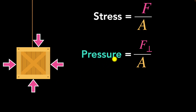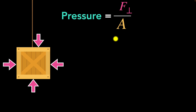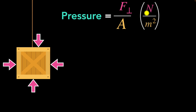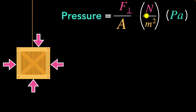Let's understand pressure a little bit better. What about its units? Because it's force per area, the unit of force is newtons and the unit of area is meters squared. So the standard unit of pressure becomes newtons per meter squared, which we also call pascals. Over an area of one meter squared, if there's one newton of force acting perpendicular to it, then the pressure is one pascal — and that is a very tiny pressure. One newton exerted over one meter squared is incredibly tiny.